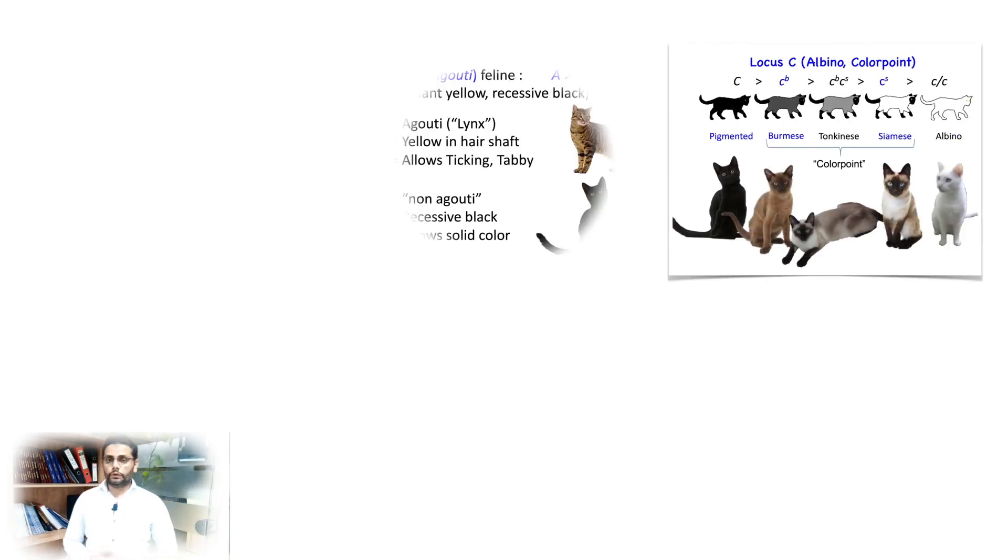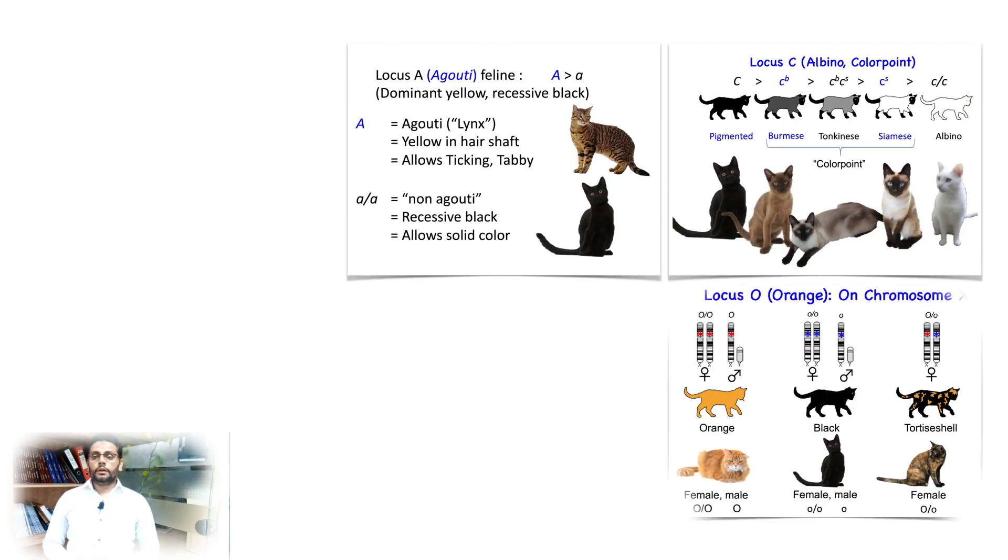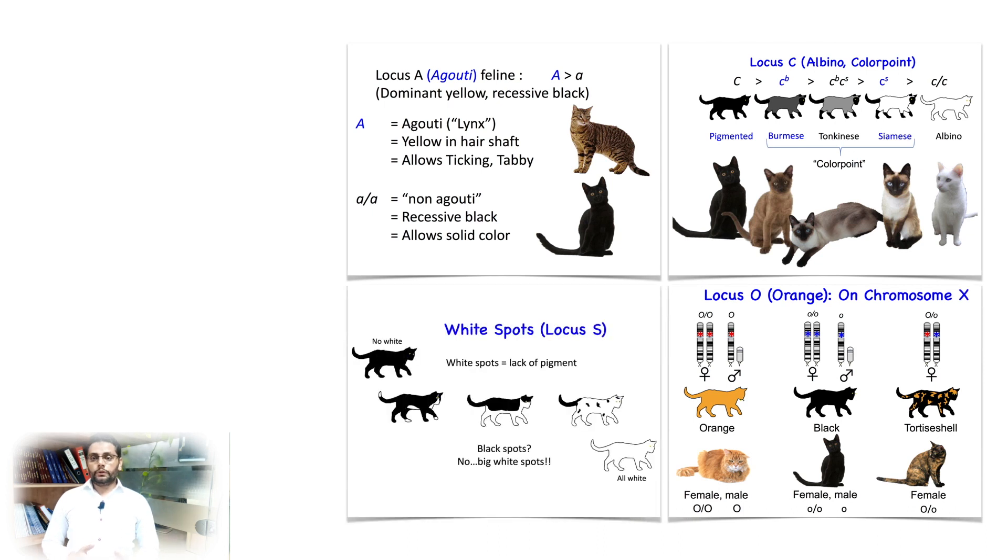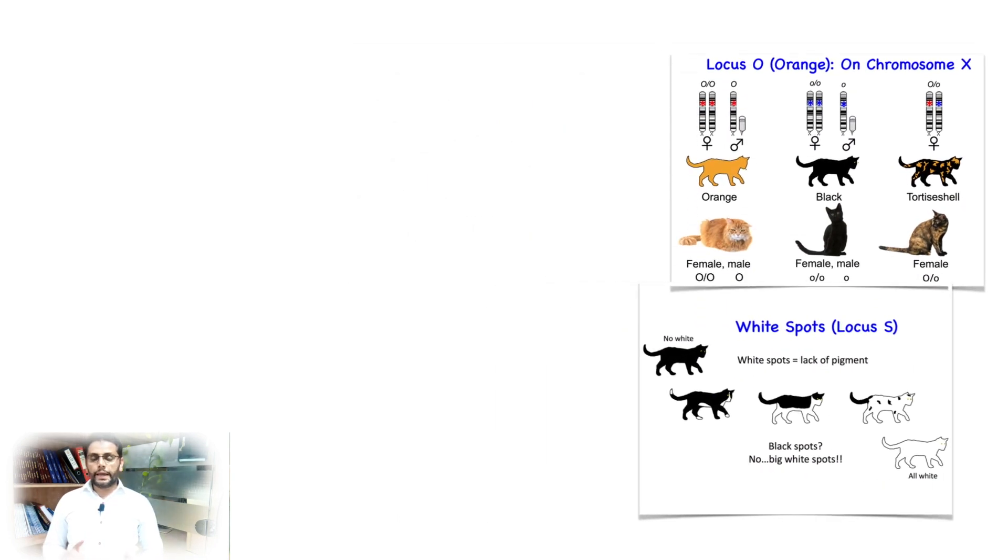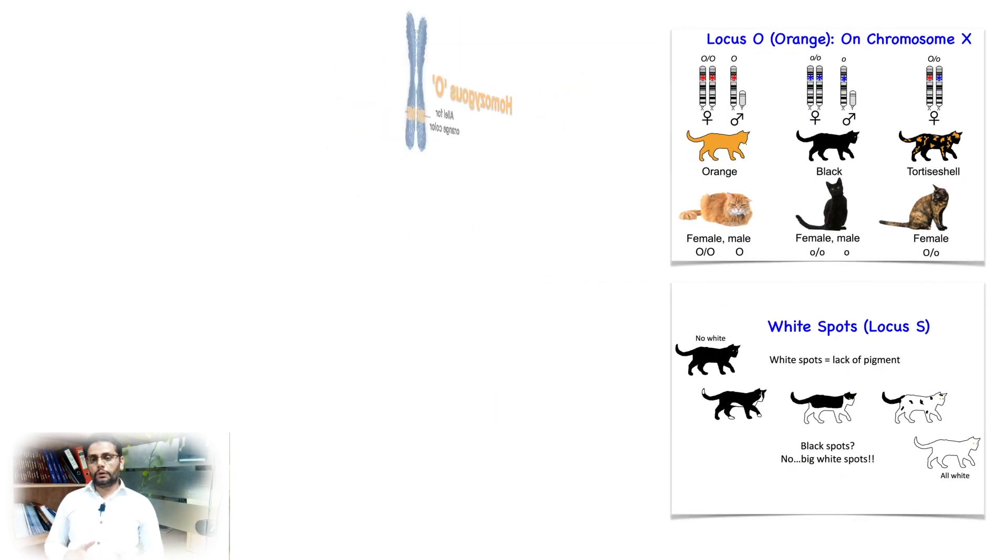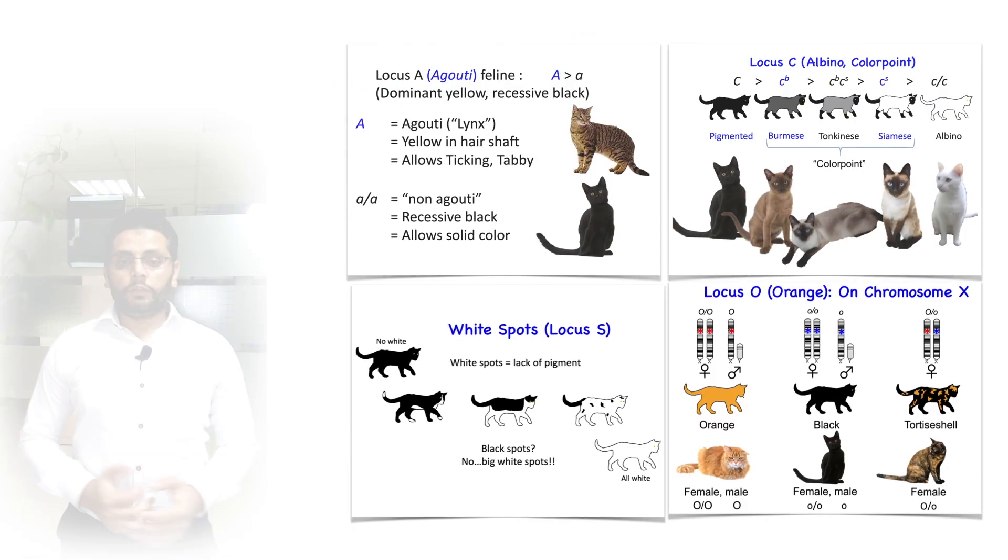In cats, a number of genes are involved in coat color determination, including color print locus C, agouti locus A, orange locus O, and locus E, as well as white dominant locus W and others. Most of these genes are autosomal in nature, except color locus orange, which is located on the X chromosome.